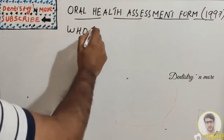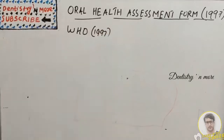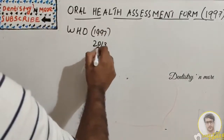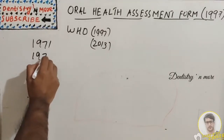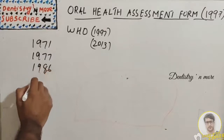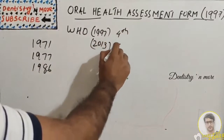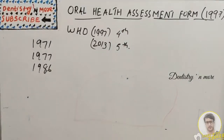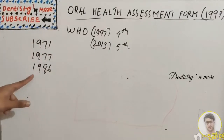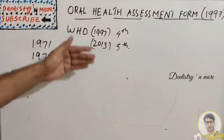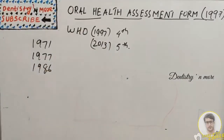This WHO Oral Health Assessment Form is from 1997; we also have the 2013 version. It started in 1971 as the first edition, then second edition in 1977, third in 1986, the fourth edition in 1997, and recently a fifth edition. It gets updated every decade, sometimes twice in a decade. The updates occur because of gradual changes in disease patterns, requiring modification of the indices included.